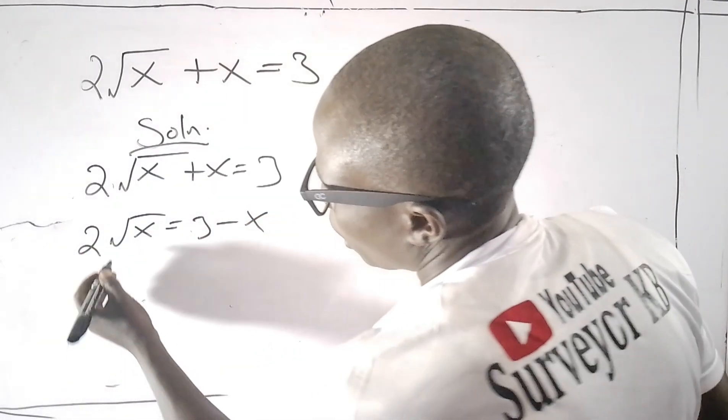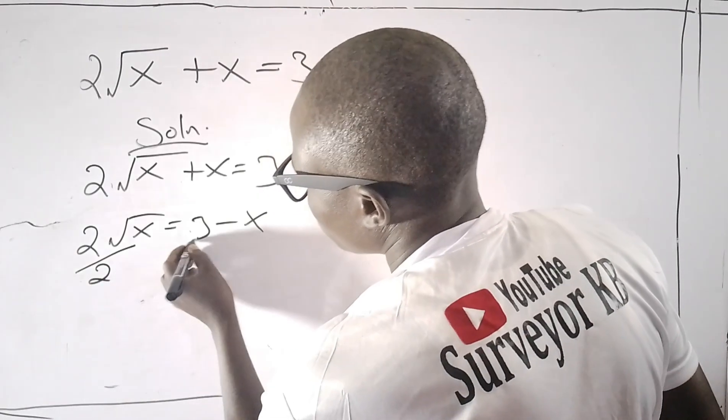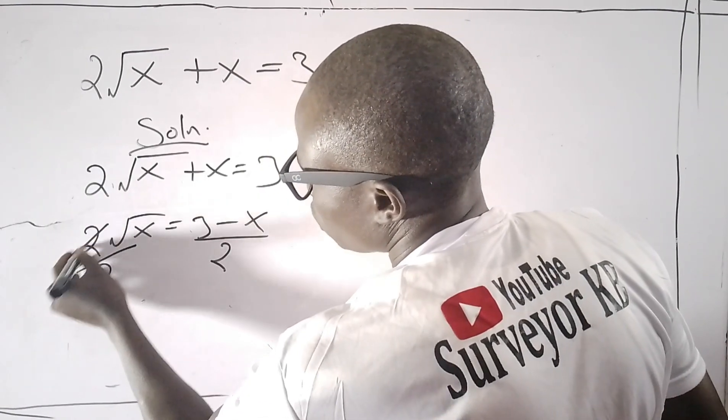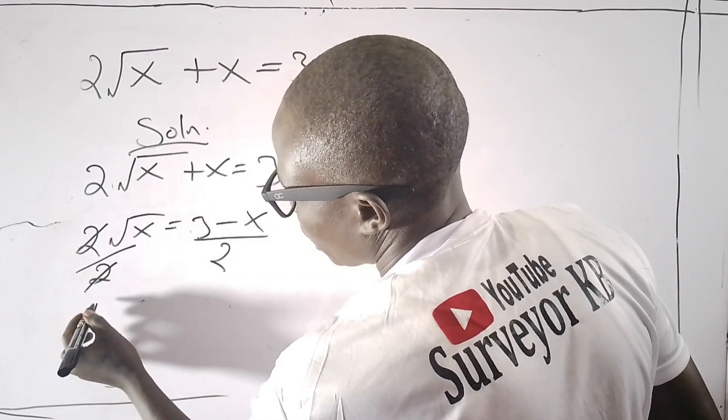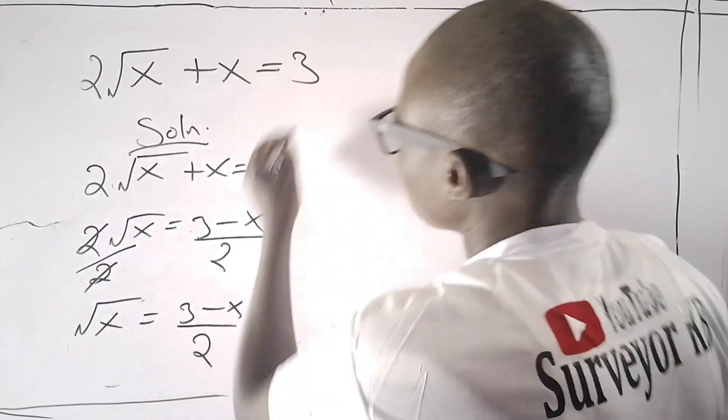I need to divide both sides by 2, so that these two will go with these two. So I have √x equals (3 - x)/2.